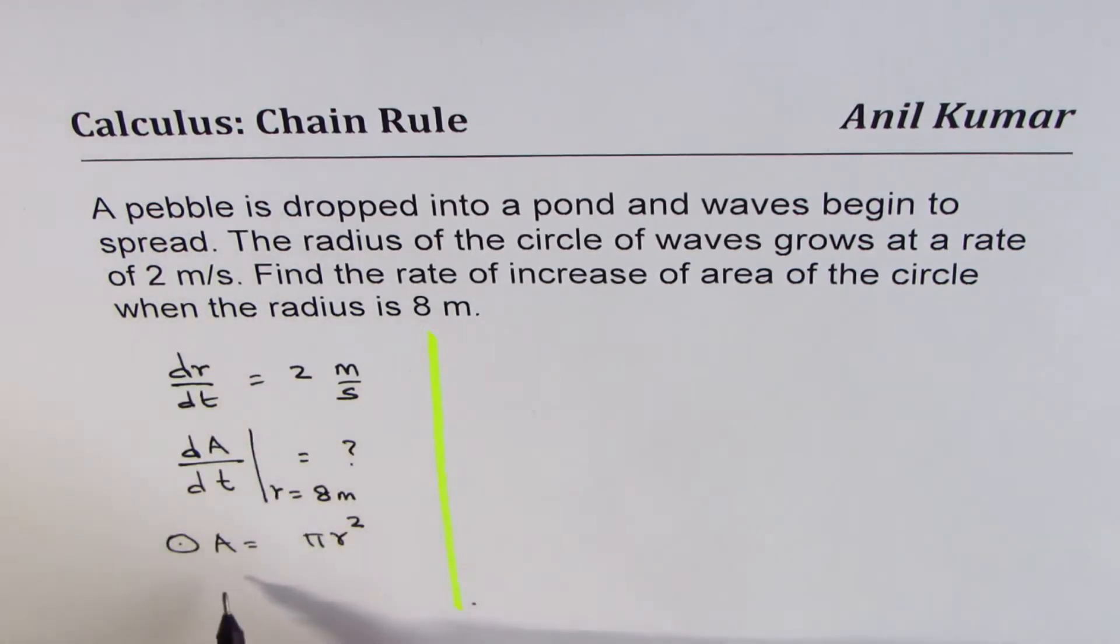So we can say radius is equal to 2 times time. So that gives you the equation here, 2 meters per second. So units for the rate is meters per second. And when you multiply by second, s cancels, you get meters. So that becomes the relation. So now we have all the things which we need.